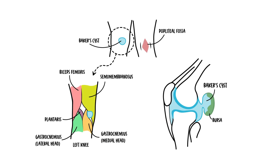In summary, Baker's cysts are fluid-filled cysts that form at the back of the knee. Baker's cysts form in adults as a result of degeneration of the knee joint. Baker's cyst is often not a problem, but may cause stiffness and discomfort. Treatment is only done if the patient is symptomatic.